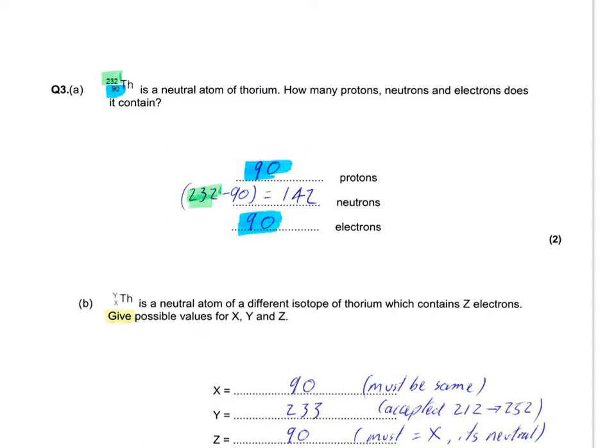Number of neutrons is the total number of nucleons, protons take away the number of those nucleons which are protons. 232 take 90. We've got 142 neutrons.